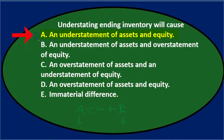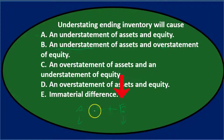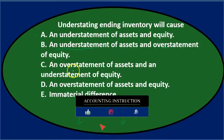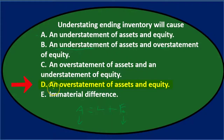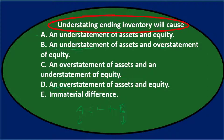So A — an understatement of assets and equity — is basically what we have. Assets are clearly understated because inventory is understated. Equity also goes down to keep the accounting equation in balance. B says overstatement of equity, which would put us out of balance. C says overstatement of assets, which contradicts the understatement of inventory. D says overstatement of assets and equity — also eliminated. E says immaterial difference. The answer is A.